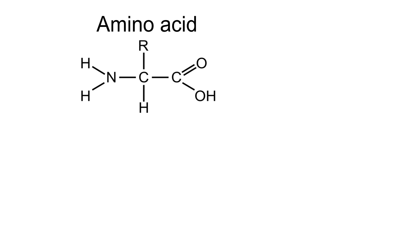There are lots of different parts of an amino acid that you need to be familiar with. On the left-hand side we have the NH2 group — this is an amine group, or amino group. On the right-hand side we have COOH, which is a carboxylic acid group. Then we have a central carbon with one hydrogen bonded to it, and an R group, which means variable group.